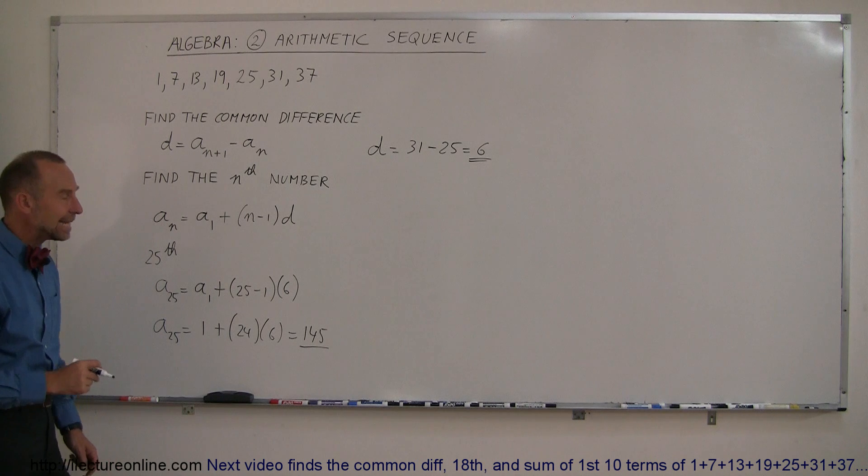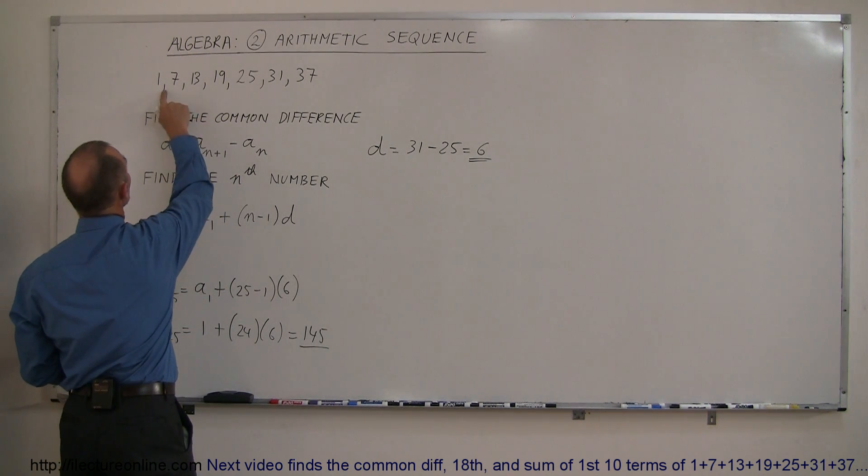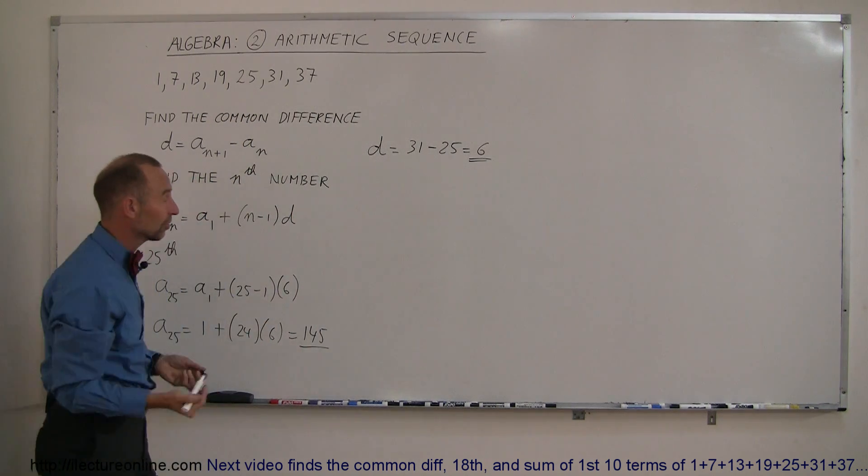So you can very easily find any number in any arithmetic sequence simply by using this equation. And just to see how that works, let's say we find the 1, 2, 3, 4, 5, 6. How about if we find the 7th one, that should equal 37, let's try it.